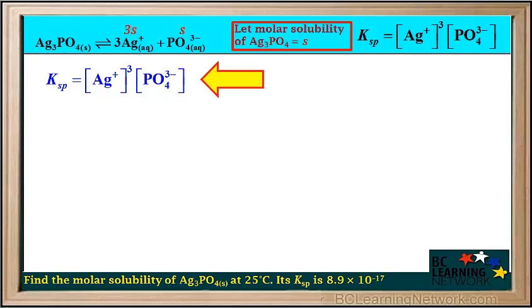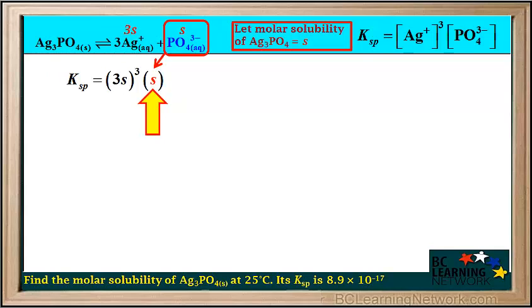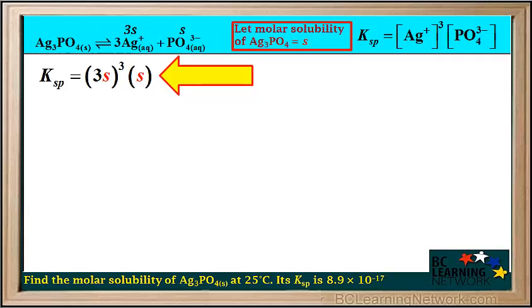Now we need to find the value of the molar solubility s. We start by writing down the Ksp expression. We have determined that the concentration of Ag+ is equal to 3s, so we can substitute 3s in for the concentration of Ag+ in the Ksp expression. The equation also tells us that the concentration of phosphate, PO4 3-, is equal to s, so we can substitute s in for the concentration of PO4 3- in the Ksp expression.